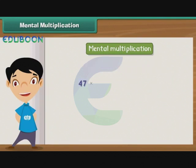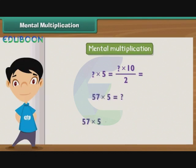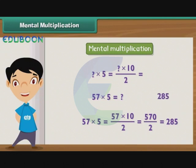For example, to multiply 47 by 9, first multiply 47 by 10 to get 470. Now divide 570 by 2 to get 285 as the result.